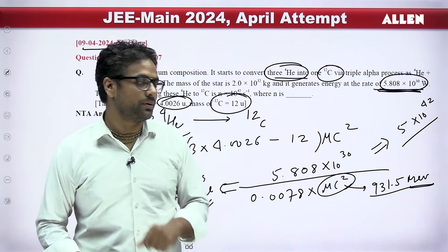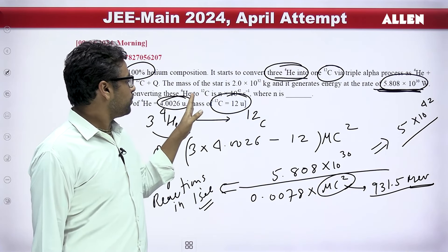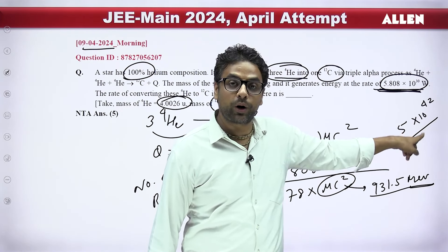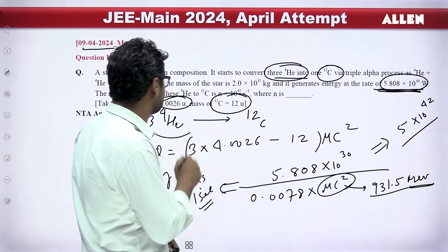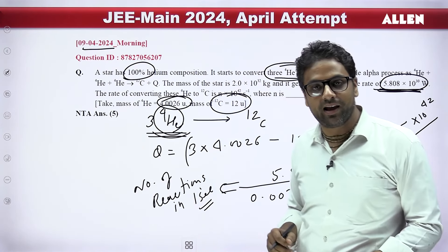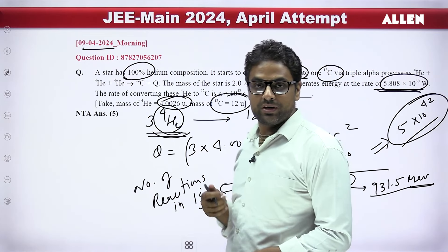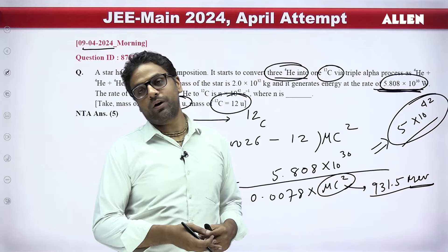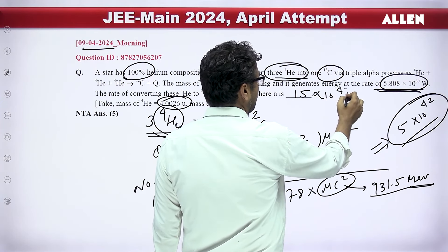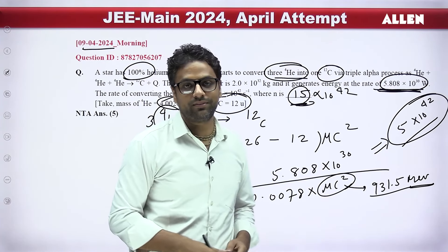The question asked for the rate of converting He⁴ to ¹²C. Since each reaction converts three helium nuclei — not one — the total rate of helium conversion is three times the number of reactions per second. So the answer should be 3 × 5 × 10⁴² = 15 × 10⁴², making n = 15. However, the answer given in the key is 5, which appears to be a discrepancy.